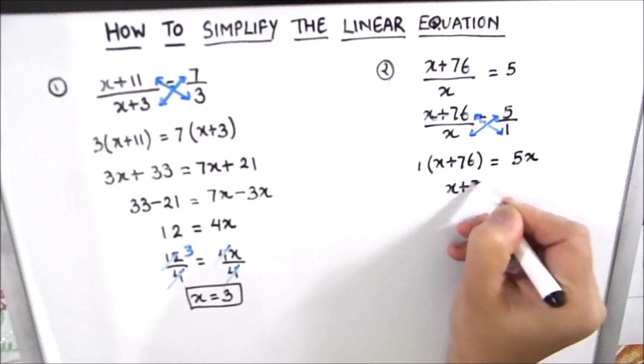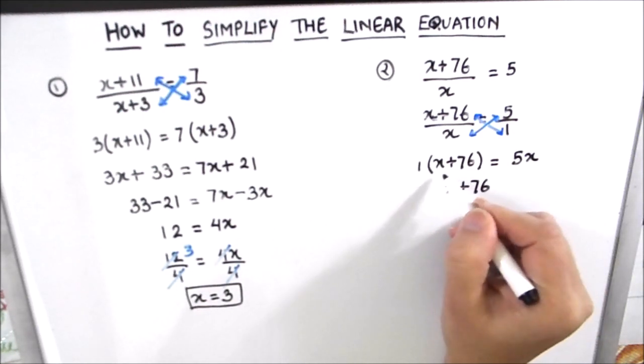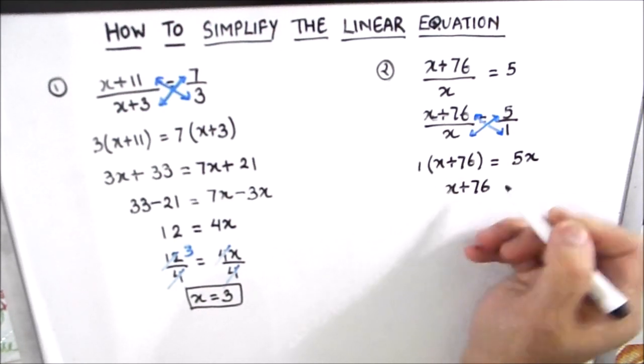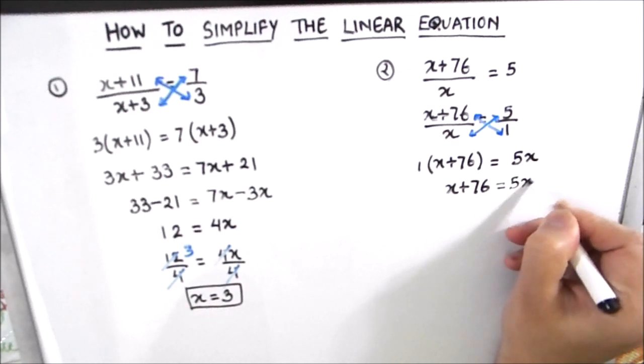x plus 76 we will distribute. So 1 times x is x and 1 times 76 is 76 is equal to 5x.